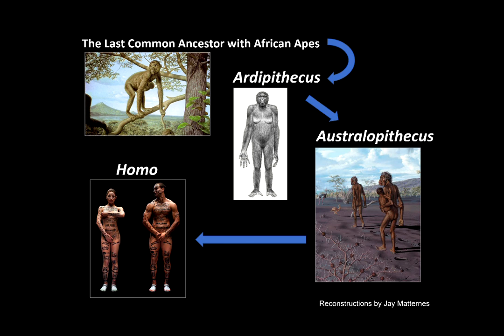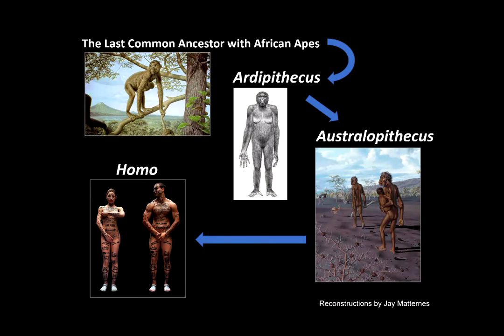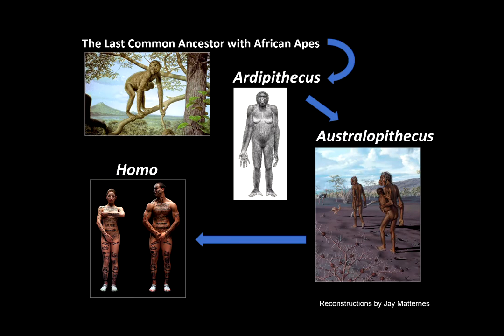The third major transition in human evolution is indicated by the genus Homo. Around two million years ago in the fossil record, we start to see hominid fossils that have larger brains. They're fossils associated with stone tools and animal butchery. These are the remains of people who were able to survive in an even wider range of environments. For the first time, we start to see evidence that our ancestors were living not just on the African continent, but also across Eurasia.